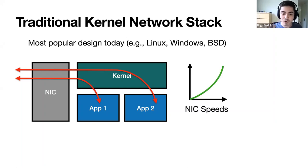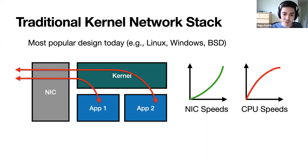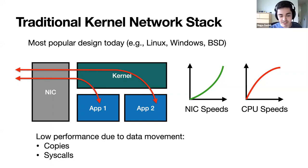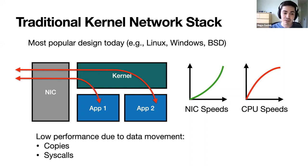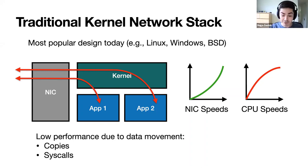The problem is that over the last 10 years or so, NIC speeds have grown significantly, but CPU performance started to plateau. So as a result, the kernel became a bottleneck to many networked applications. And the reason the kernel performs poorly is because it has to pay overhead due to data movement — it needs to copy data between kernel space and user space, and it also needs to pay the overhead of system calls.